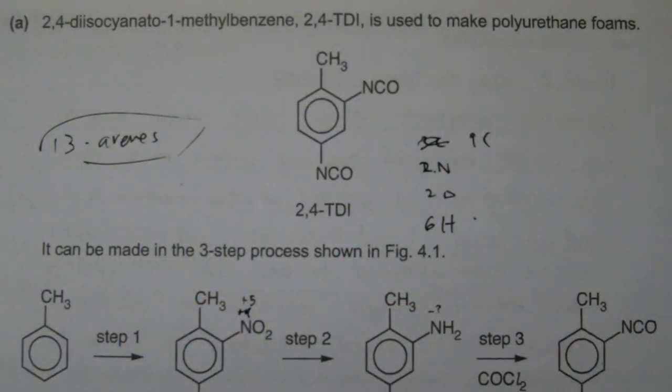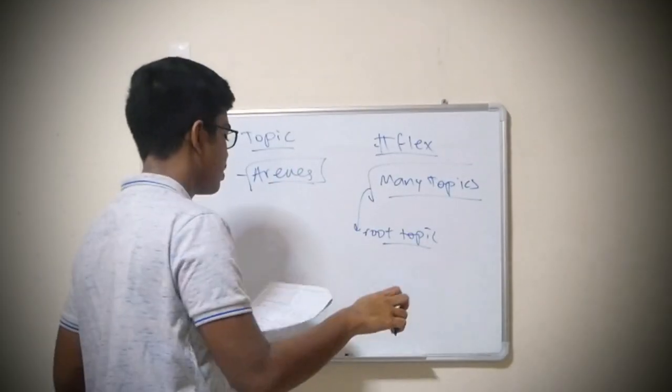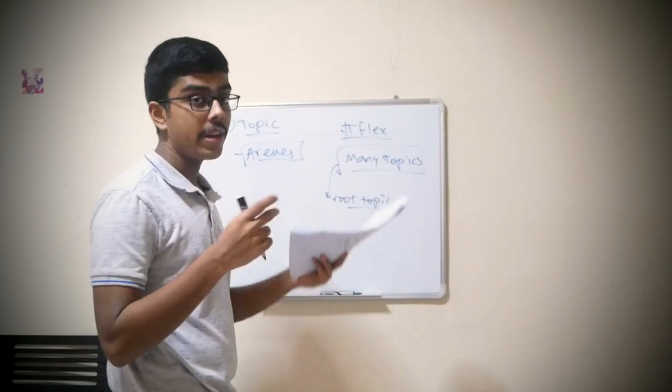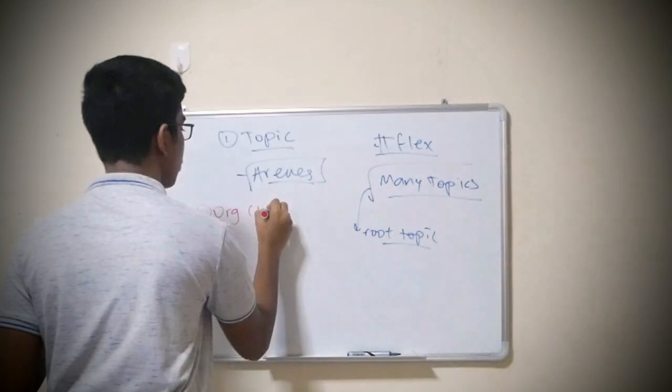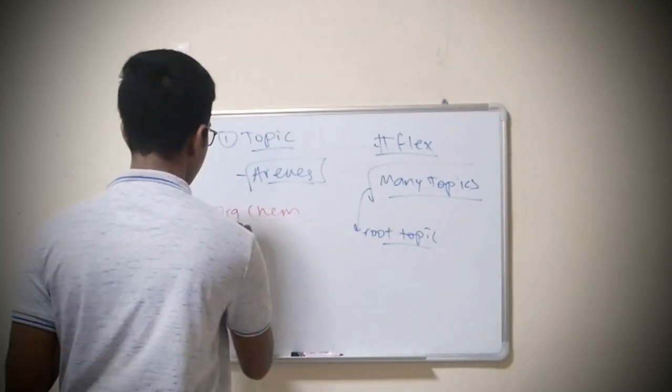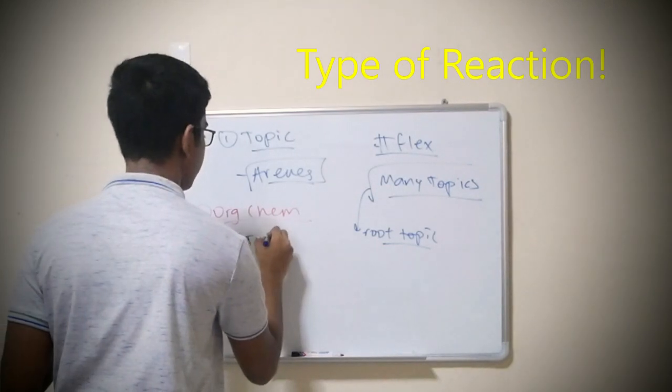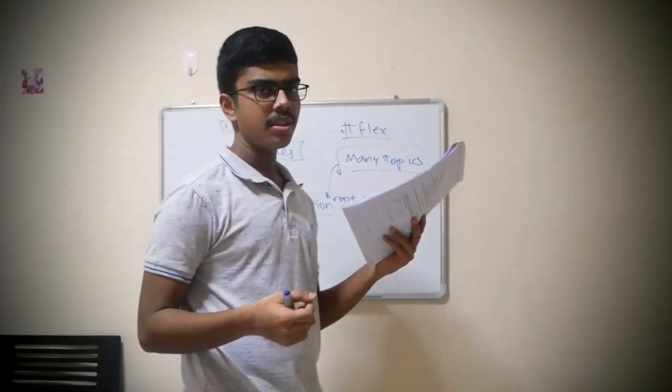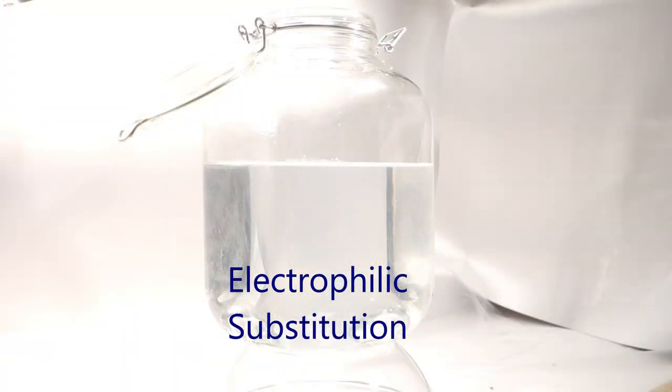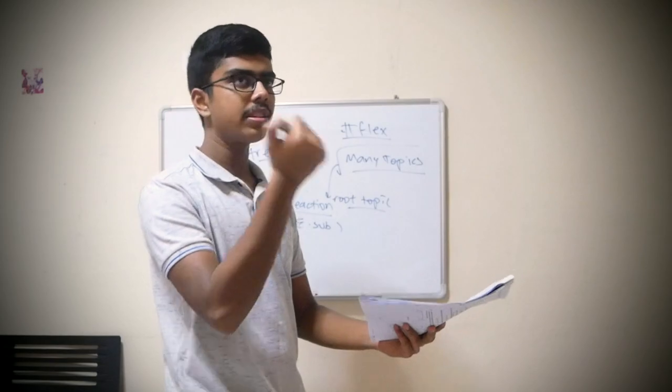Your main point is to take out the root topic. When you look at this question, it's an organic chem question - you see benzene rings, so it's probably a question on benzene. Once you know it's an organic chem question, always identify the type of reaction involved. In this case, it involves electrophilic substitution.